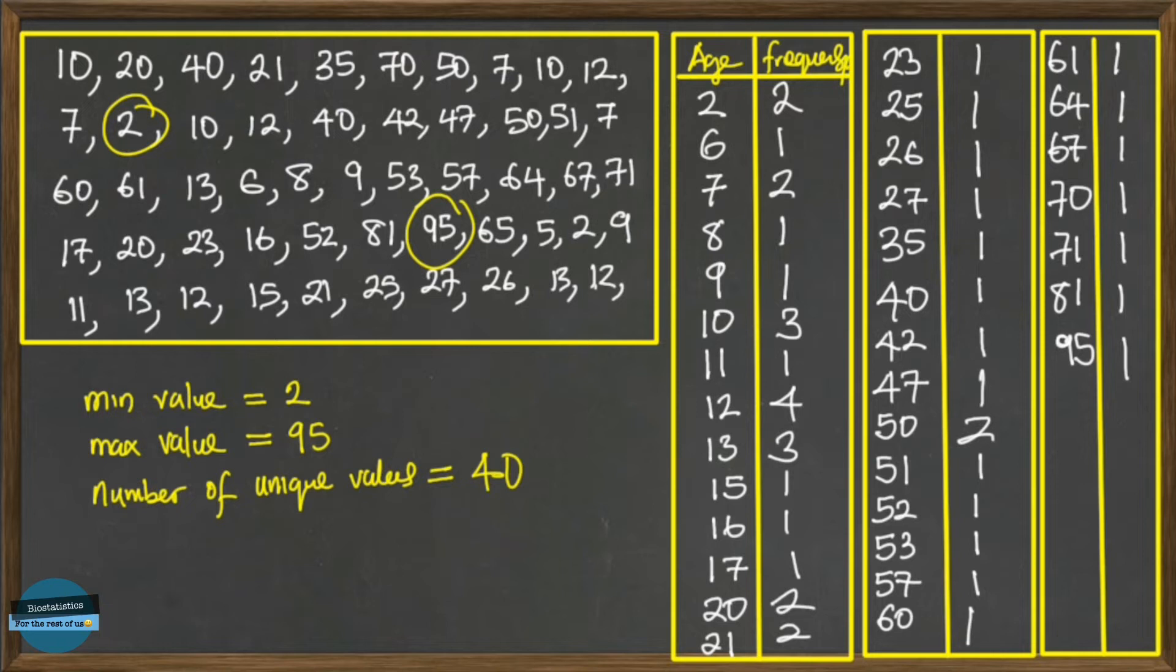So this appears to even be more confusing than our initial table that we have, and our tables are actually meant to summarize. This is not summarizing anything. So when you have a situation like this, when the range is quite wide (you can see 2 to 95), and this also has number of unique values being large, then you cannot start thinking of using an ungrouped frequency table. You have to use a grouped frequency table.